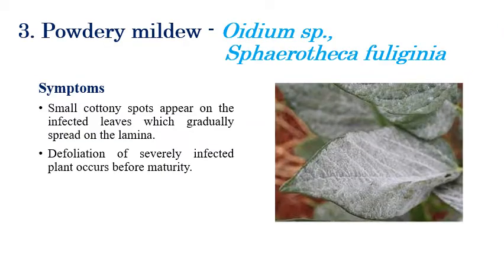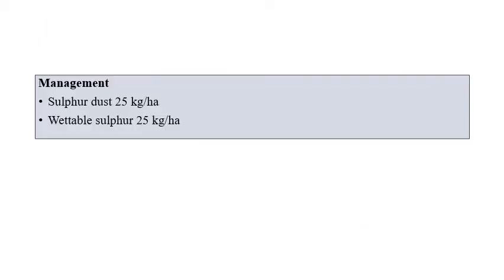The third disease is powdery mildew, caused by Oidium species or Sphaerotheca philogenia. On the right side, white powdery growth can be seen on the surface of the leaf, later spreading to the lamina. In severe cases of infection, defoliation will occur and leaves fall from the plant. The powdery growth can be seen on any surface of the leaf. For management, sulfur dusting at 25 kg per hectare or wettable sulfur at 25 kg per hectare is recommended.